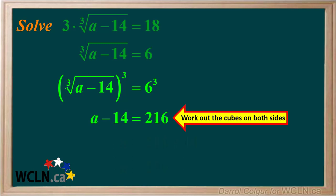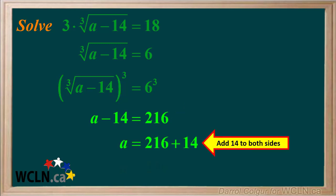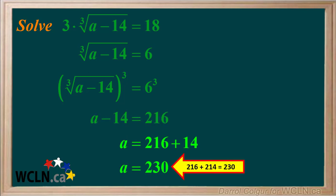So we're left with a minus 14 is 216. The next thing we can do is isolate a by adding 14 to both sides. Adding 14 to both sides gives us a equals 216 plus 14. So next we just add up 216 plus 14. 216 plus 14 is equal to 230.